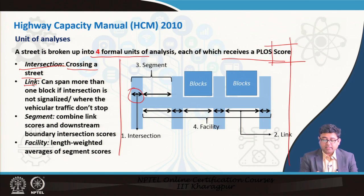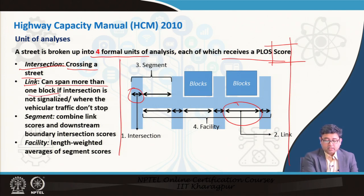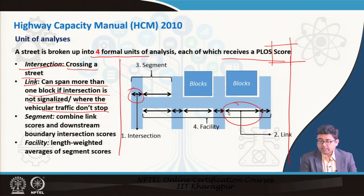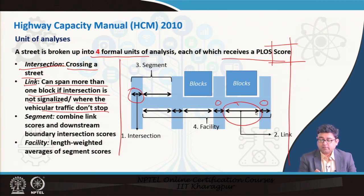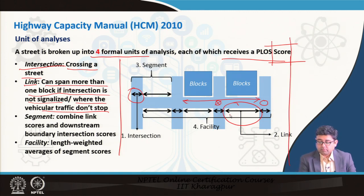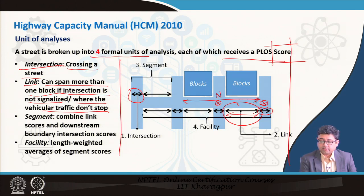The second unit is a link — the distance between two points. A link can span more than one block if the intersection is not signalized or where vehicular traffic does not stop. Here the link is the distance between two signalized streets. If there is no signal at a junction, then the link would be the entire distance between two signalized intersections. So the link does not include the intersection if it is signalized; if it is non-signalized, it will also include the intersection.